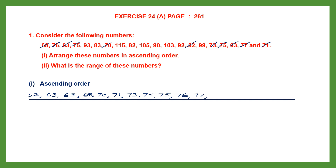Now moving to the 80s: we have 82 and then 83. In the 90s, we have 90, 92, and 93. Then what's left is 115, 105, 103, and there's a 99 here — so we write 99 before the 100s.